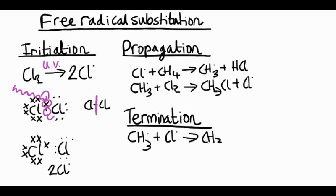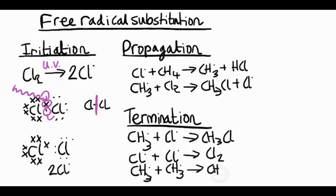a methyl radical plus a chlorine radical would make chloromethane, or two chlorine radicals would make a chlorine molecule, or two methyl radicals would react together to make ethane. So we'll have some ethane in our product mixture too.